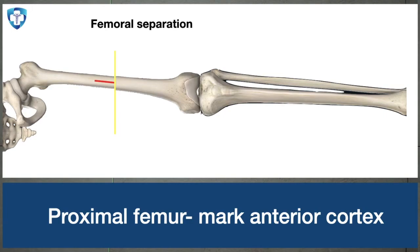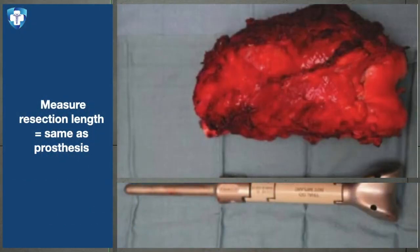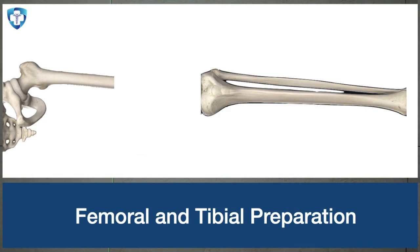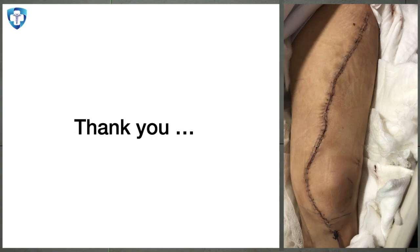We have now taken the proximal osteotomy, completed the arthrotomy, released all muscles, protected the vessels, and marked the anterior femur. We separate the femur and remove the specimen. After specimen removal, we measure the resection length, which should match the length of the prosthesis to be used. We then prepare the femur and tibia separately, use trial implants, and finally apply the definitive implants. This is an intraoperative picture of the distal femur megaprosthesis — this concludes the procedure of distal femur megaprosthesis.